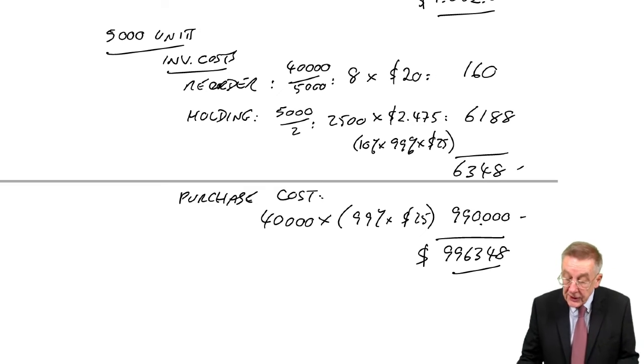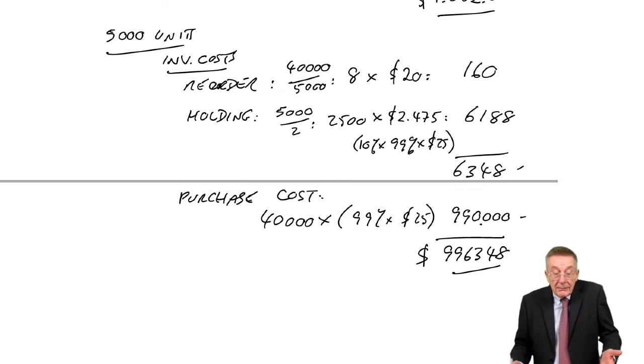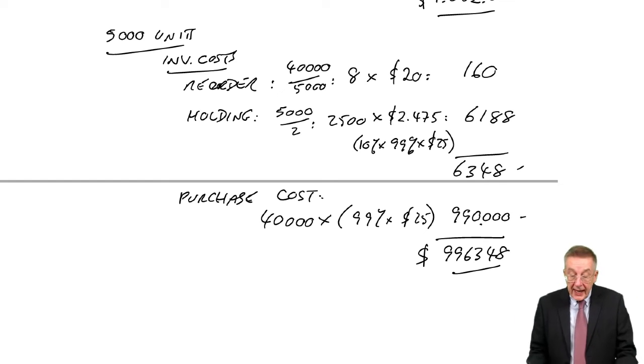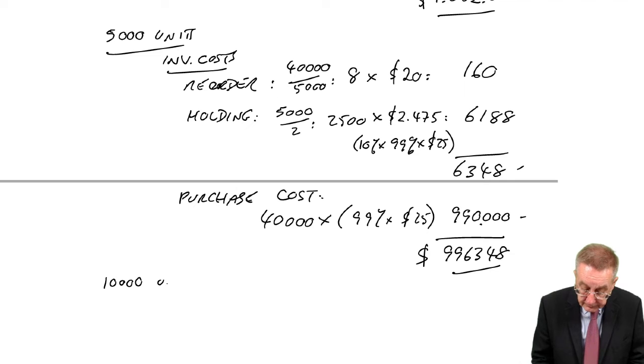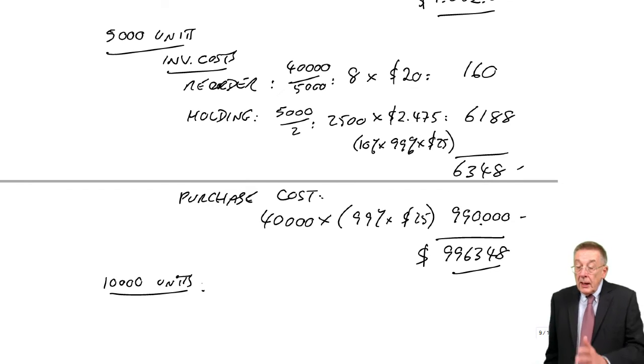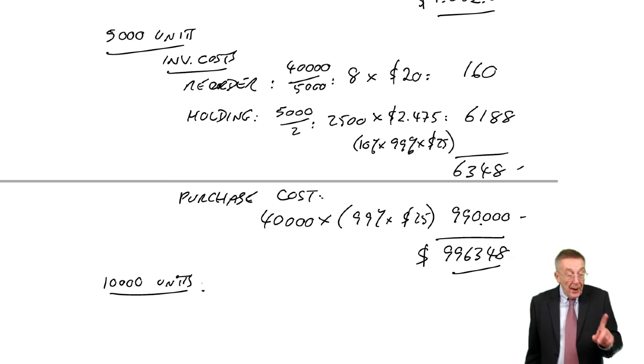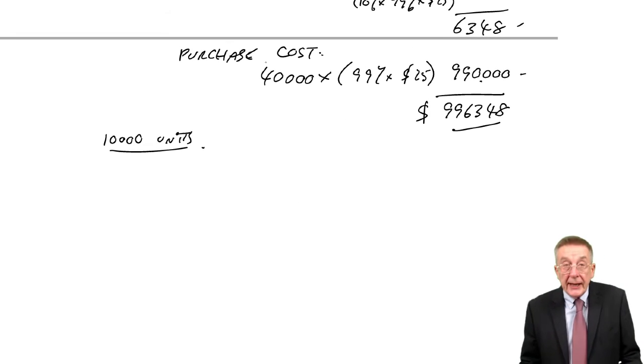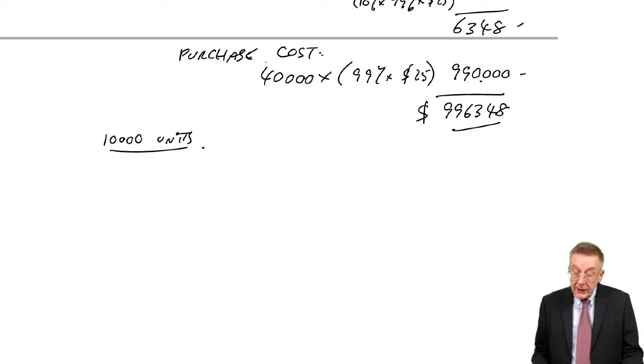6,000 units, there's no extra discount. So 6,000 units could only possibly be more expensive. But there is one more level worth trying. That's 10,000. Because if we're prepared to order 10,000 units each time, inventory costs will be higher still, but there's a bigger discount. And so the purchase price will be lower. And so let's try 10,000 and see if that's any cheaper.